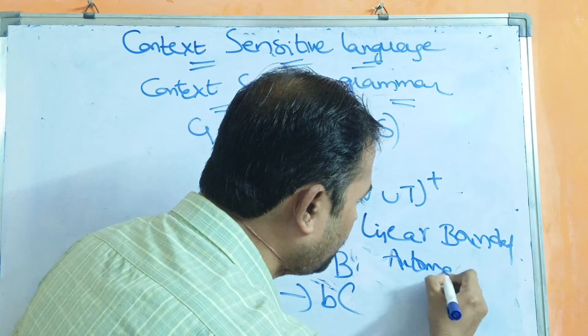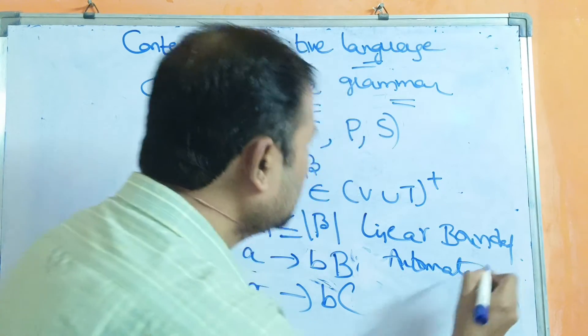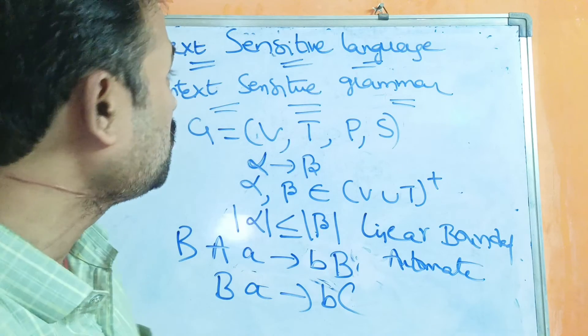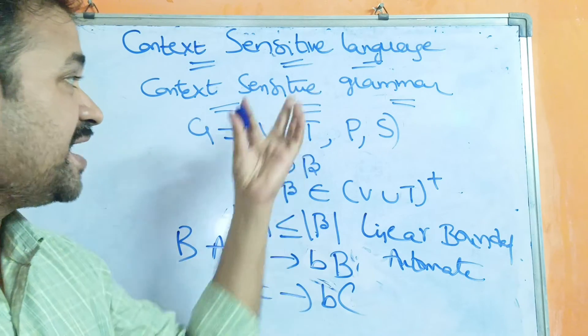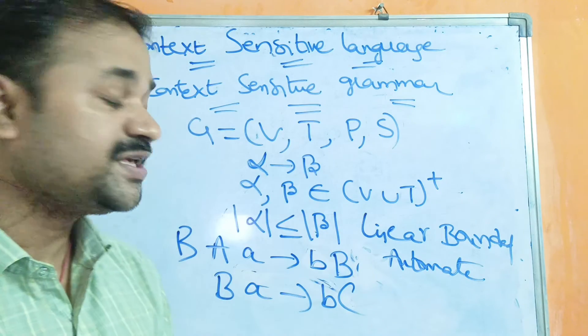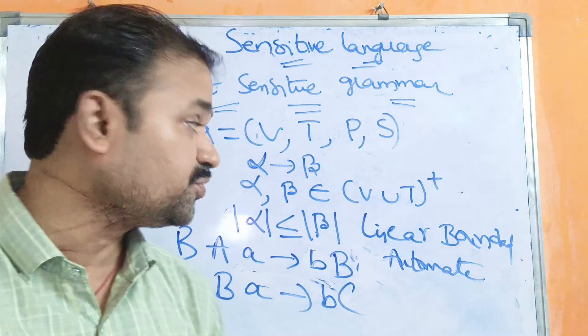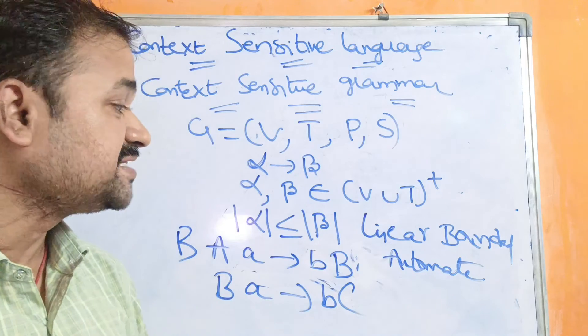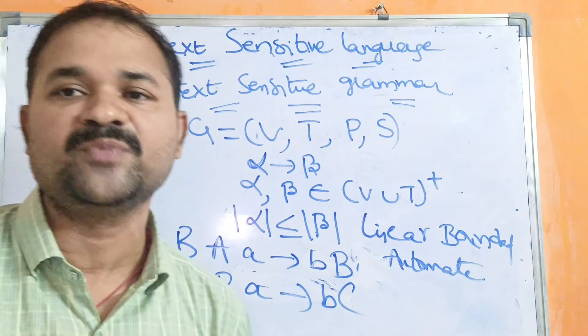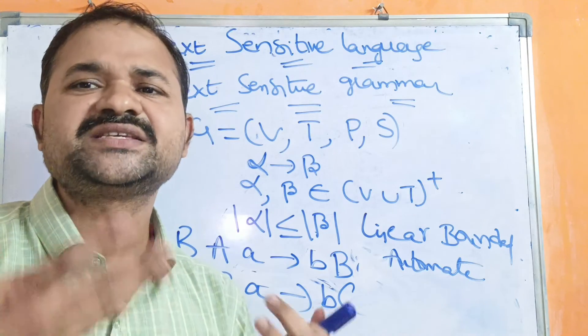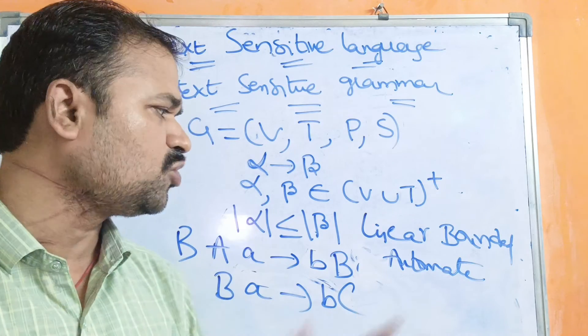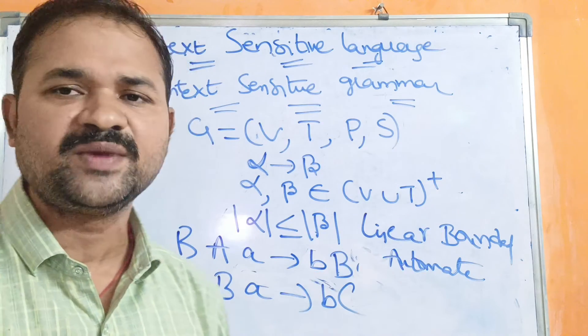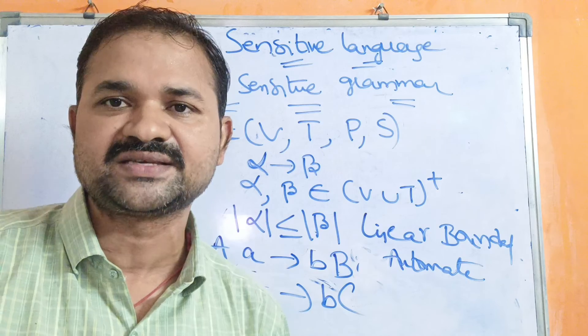Linear bounded automata is an automata, just like we have finite automata and pushdown automata. Regular grammar is accepted by finite automata, context free grammar is accepted by pushdown automata, and likewise context sensitive grammar is accepted by linear bounded automata. We will discuss more about linear bounded automata in the upcoming classes.